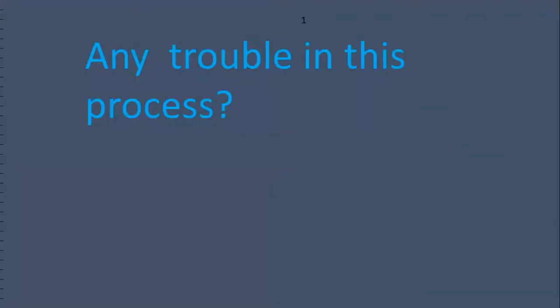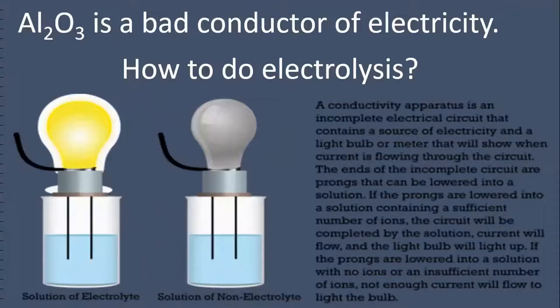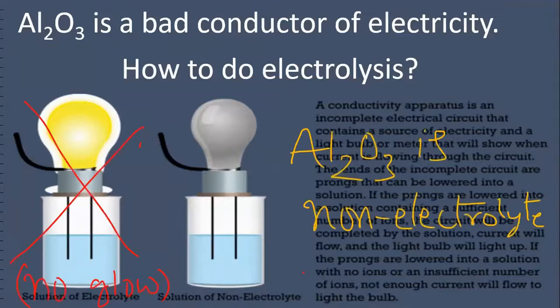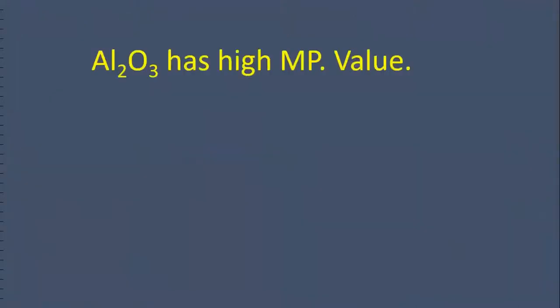Any trouble in this process? Yes, there is a very big headache. Al2O3 is a bad conductor of electricity. How to do electrolysis? Al2O3 is non-electrolyte. It is difficult to conduct the electrolysis.